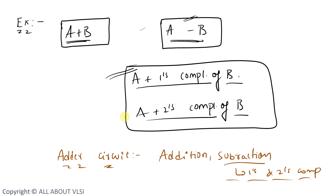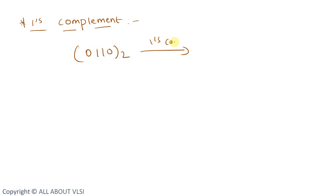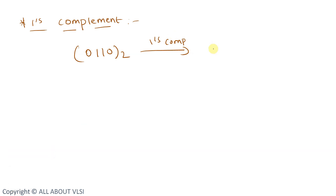Now let's find out how to perform 1's complement. If we have a binary number 0110 base 2 and want to perform 1's complement, we simply flip the bits: 0 becomes 1 and 1 becomes 0. So the 1's complement of 0110 is 1001.